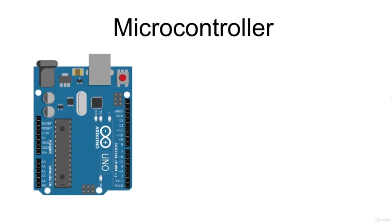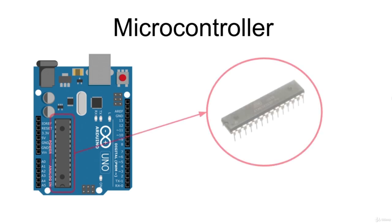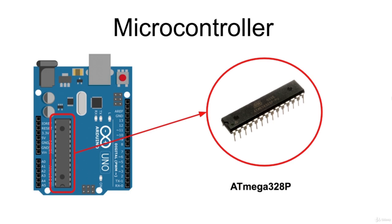The most important component of the board is the main microcontroller, the ATmega328P integrated circuit. This is the central brain of the board and it is where your code is stored and executed. Each Arduino model has its own version of microcontroller, and most Arduino products use chips from the AVR family. Remember, before creating your code, you need to know which version of Arduino you are working with in order to select the right board in the Arduino programming environment.